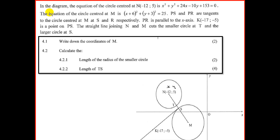Looking at question 4. The diagram tells us the equation of the circle centered at N, minus 12, 5 — that's the small circle. The equation is x² + y² + 24x − 10y + 153 = 0. It also tells us the equation of the big circle centered at M: (x + 6)² + (y + 3)² = 25. We have the equation of the big circle, and we can find the center and radius from the equation.